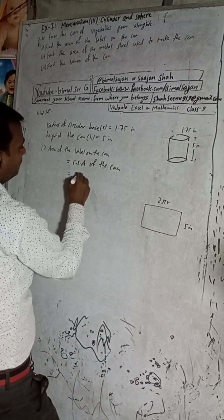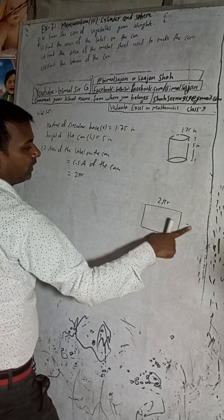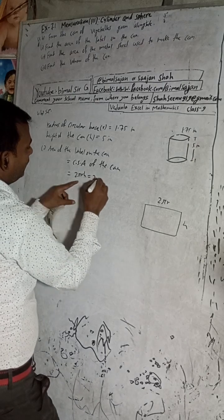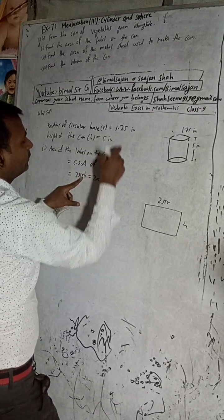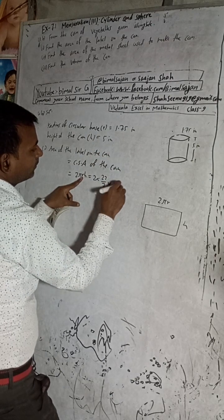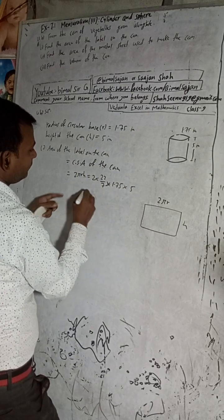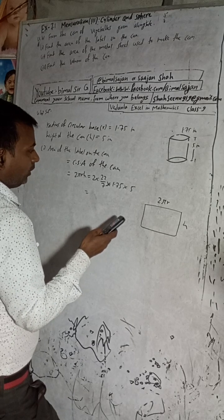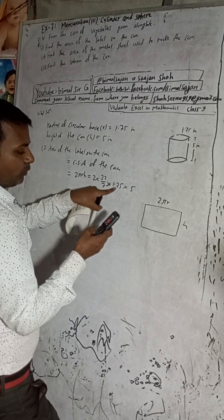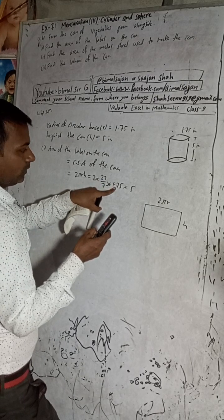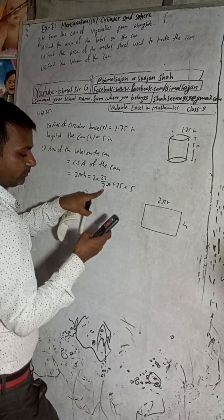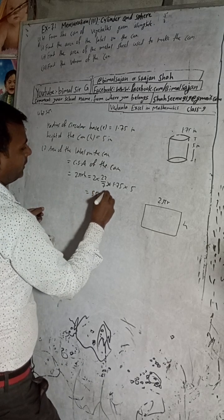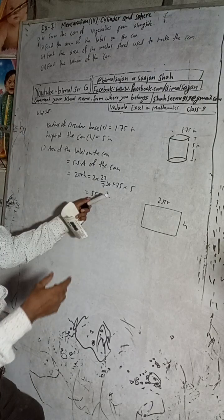The curved surface area equals 2πr times height. So: 2 × (22/7) × 1.75 × 5 = 44 × 1.75 × 5 ÷ 7 = 55 square inches. The area of the label on the can is 55 square inches.